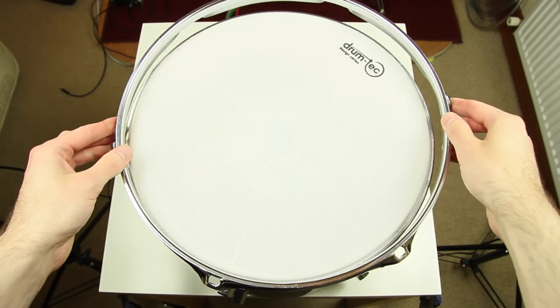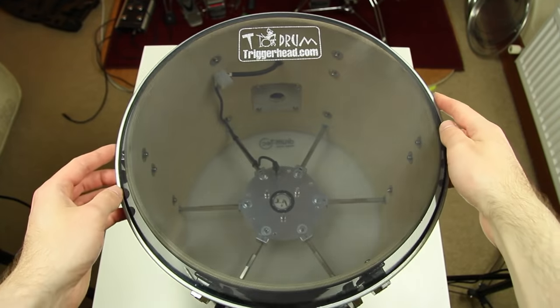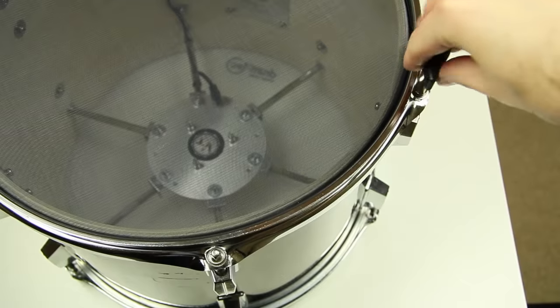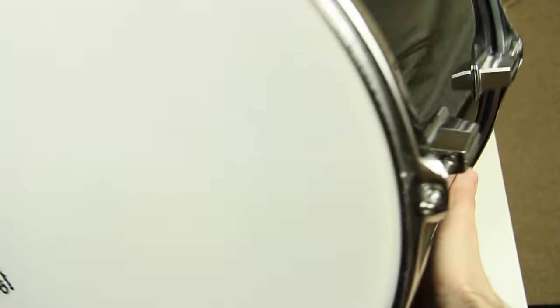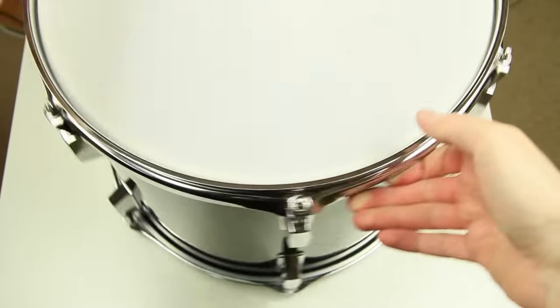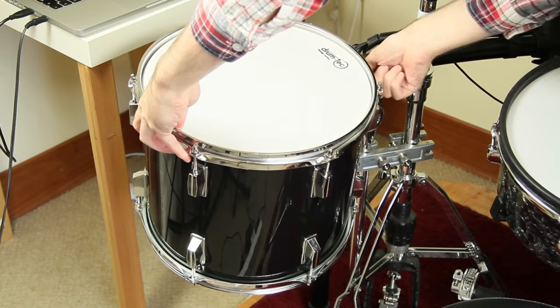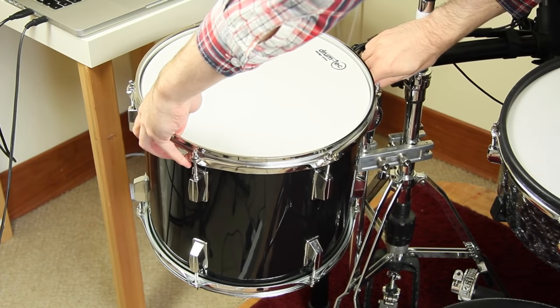We use a 2-ply DrumTech series mesh head for the top and a single-ply resonant head for the bottom. The result is a fully converted 13-inch tom. The conversion can be reverted at any time. Nothing at the shell is getting damaged.